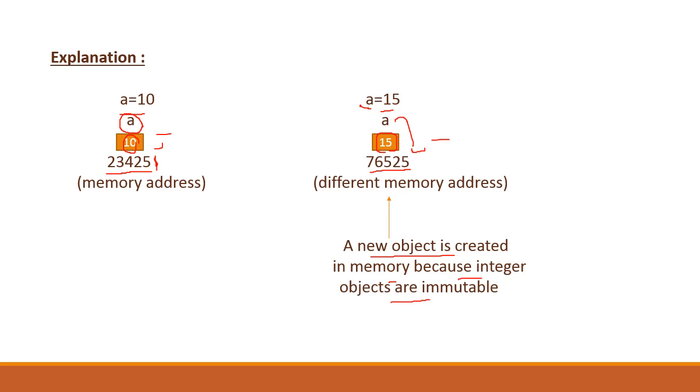When you changed a's value, two objects were created instead of the value being changed at the same memory location, because integer objects are immutable. So if any immutable object is assigned a new value, a new object will be created.